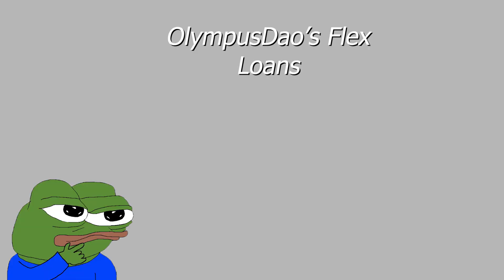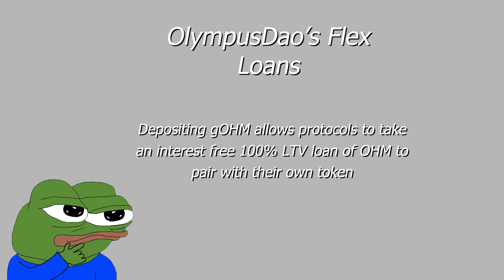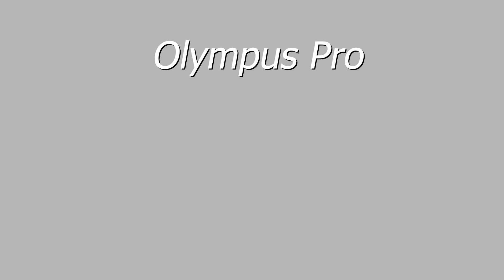Next, I'm going to quickly cover Olympus DAO's Flex Loans. Olympus Flex Loans are a tool designed for other protocols who want to increase their own protocol liquidity with the help of Olympus. By depositing GOHM as collateral, protocols can take a 100% loan-to-value loan of OHM which they can pair with their own protocol token. This helps to build native protocol liquidity for newer protocols, as well as making OHM more ingrained into the ecosystem. Olympus Pro is another product that helps protocols build liquidity, and may be covered in a future video.